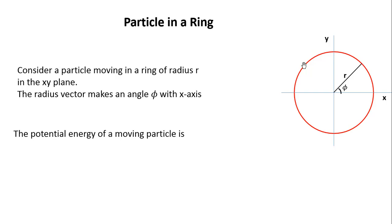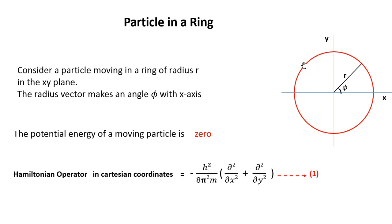Since the particle is moving in the ring, the potential energy will be zero. The kinetic energy will be equivalent to ½mv². Since we have only two dimensions, the Hamiltonian operator in Cartesian coordinates x, y, and z is: −h²/8π²m × (∂²/∂x² + ∂²/∂y²). There is no potential energy, so this is a total energy operator corresponding only to kinetic energy.